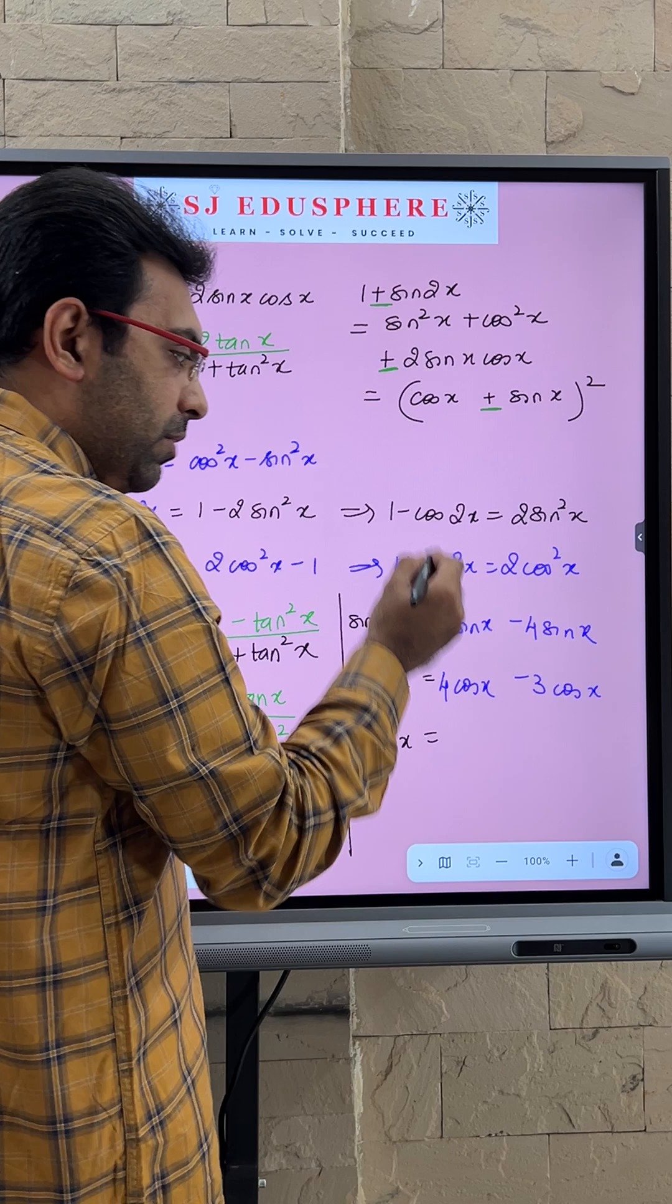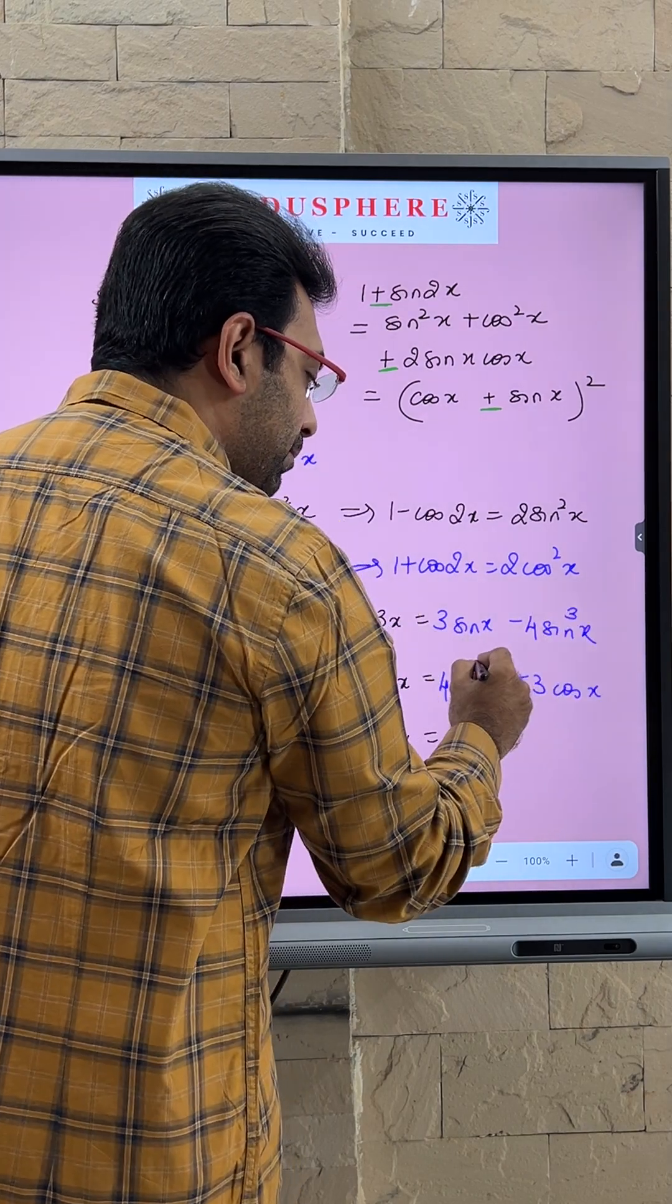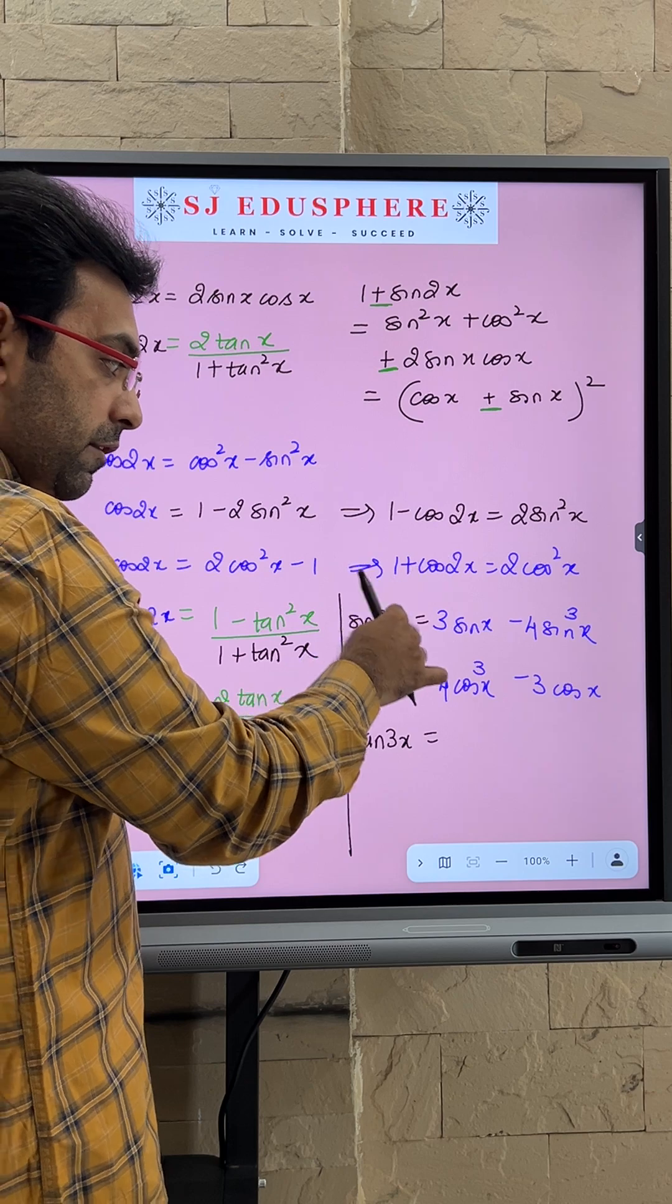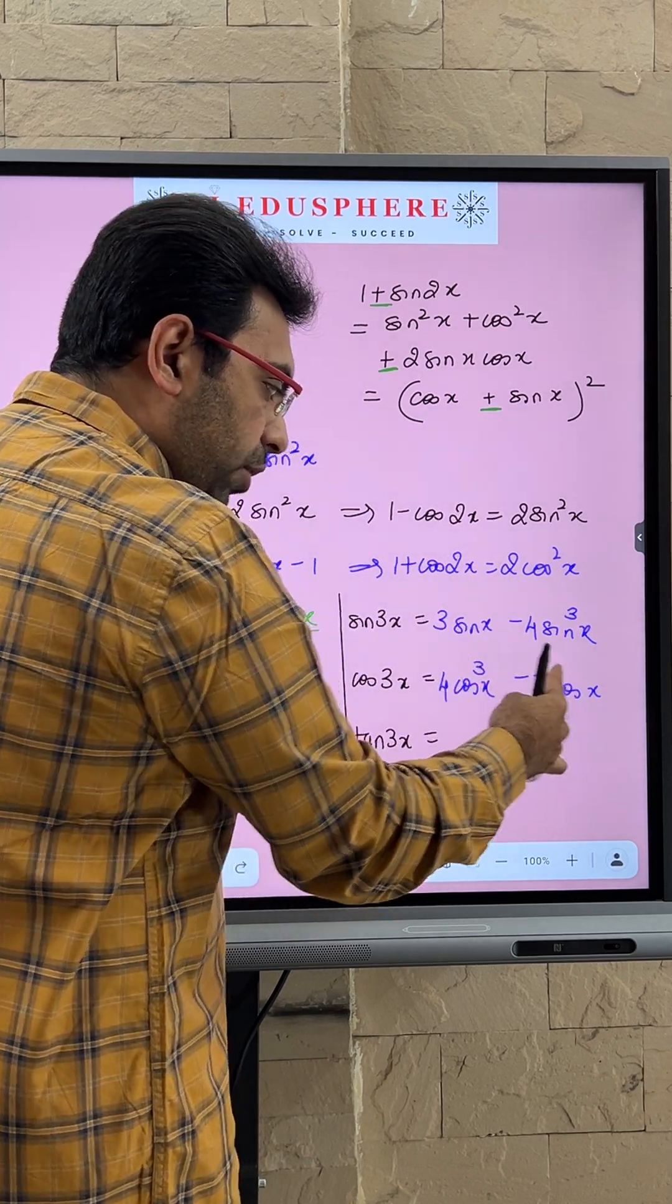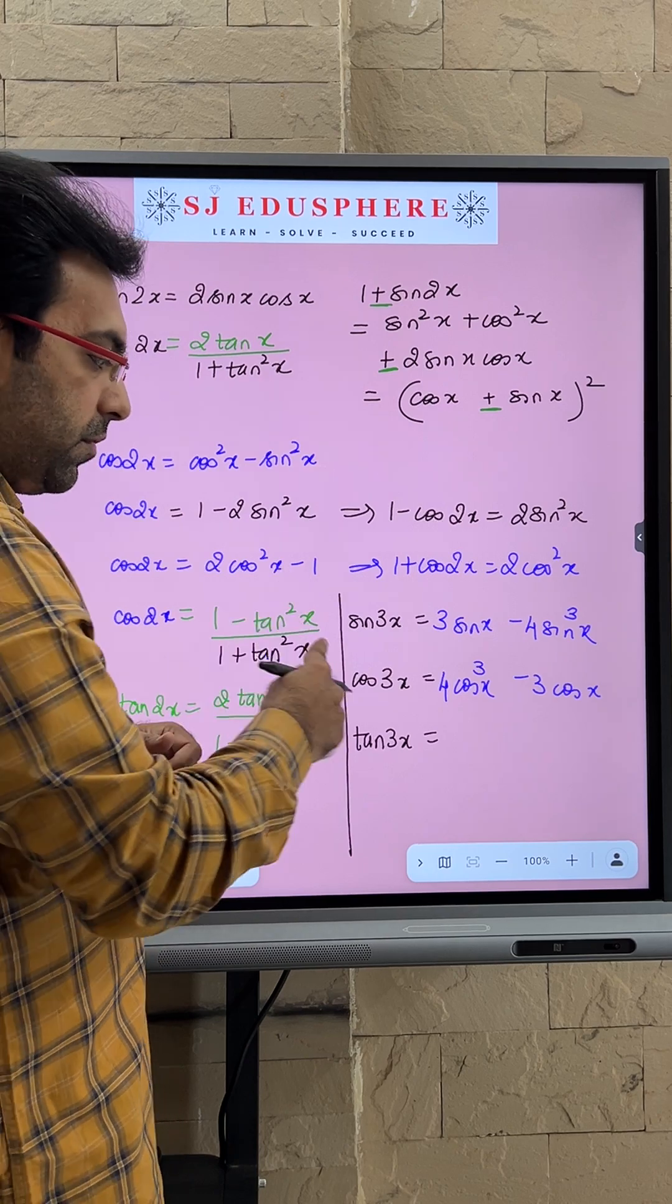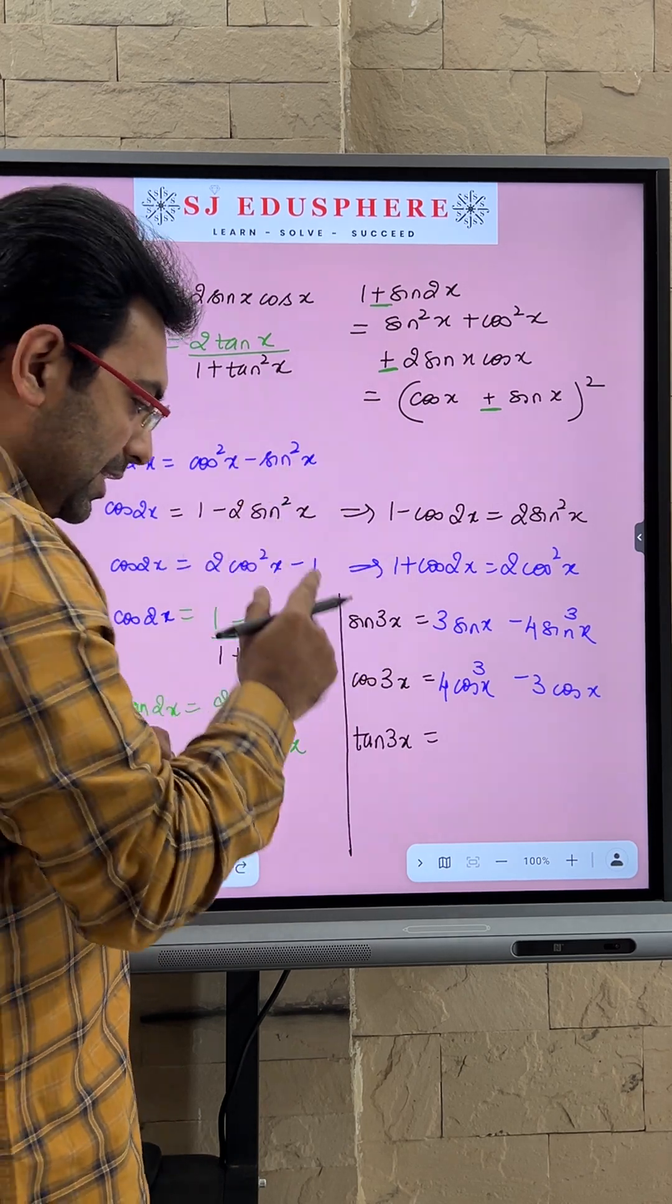And the term with 4 coefficient will have the power 3. So first comes sin, then comes cos. First comes 34, then comes 43. Sin will have only sin, cos will have only cos, 4 power 3.